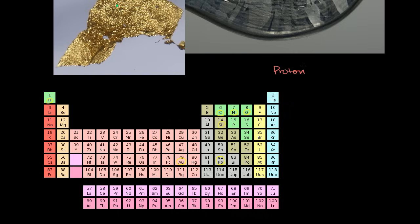The proton — specifically the number of protons in the nucleus of an atom — is what defines the element. When you look at the periodic table, the elements are written in order of atomic number, and the atomic number is literally just the number of protons in the element.